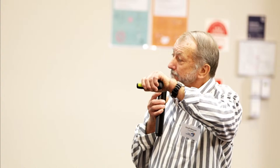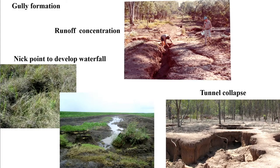This one's where you get tunnel collapse. There's a gully here and the runoff's been heading down through a tunnel up here, washed through dispersable soil, washed out all the subsoil and then the tunnel collapses and the gully grows from there.